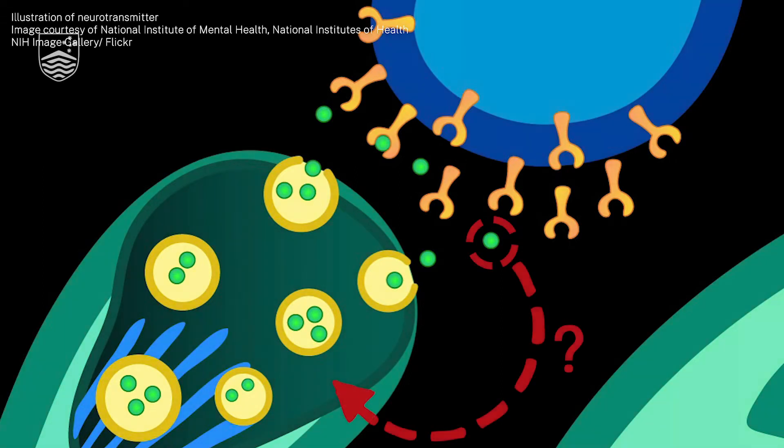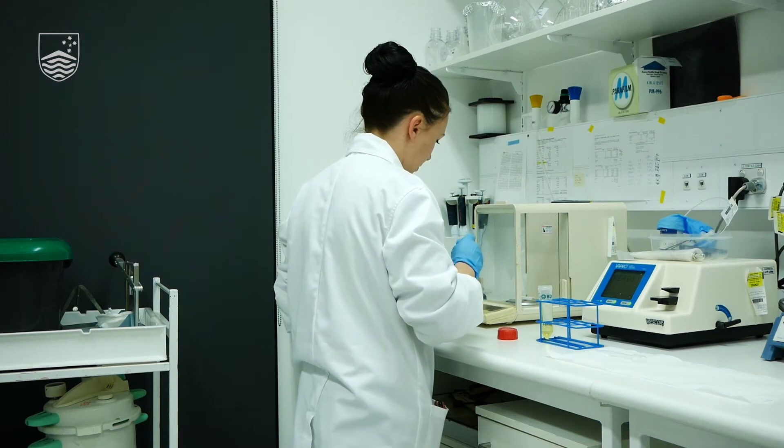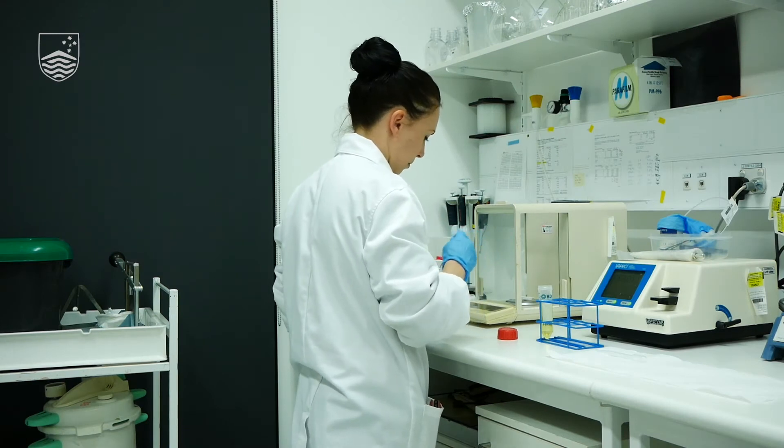My research involves looking at how neurotransmitters are replenished after the brain cells or neurons have released them. We know how this happens for many different kinds of neurotransmitters but strangely for the most abundant neurotransmitter in the brain which is one called glutamate we don't really understand how this happens.